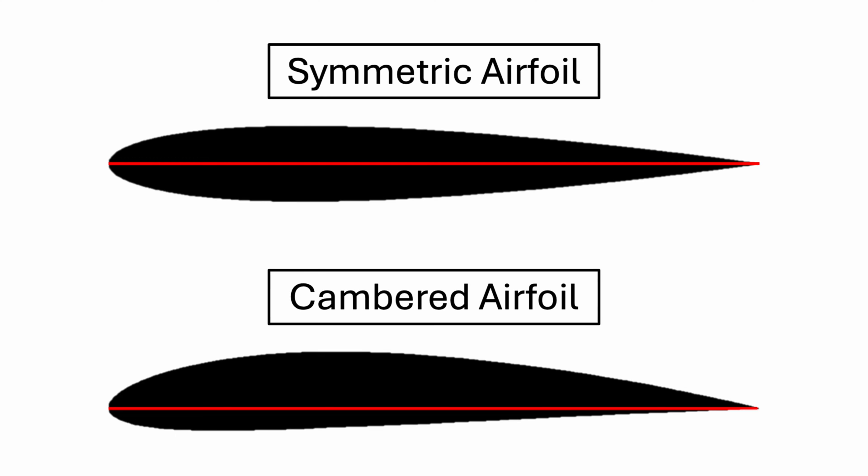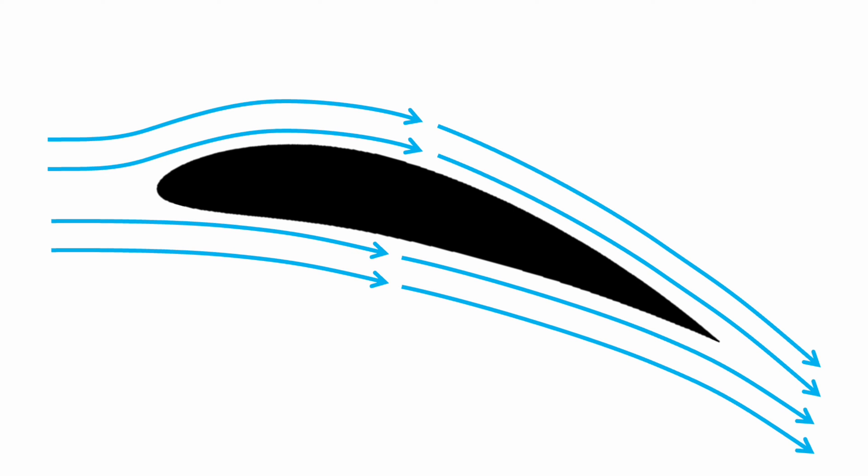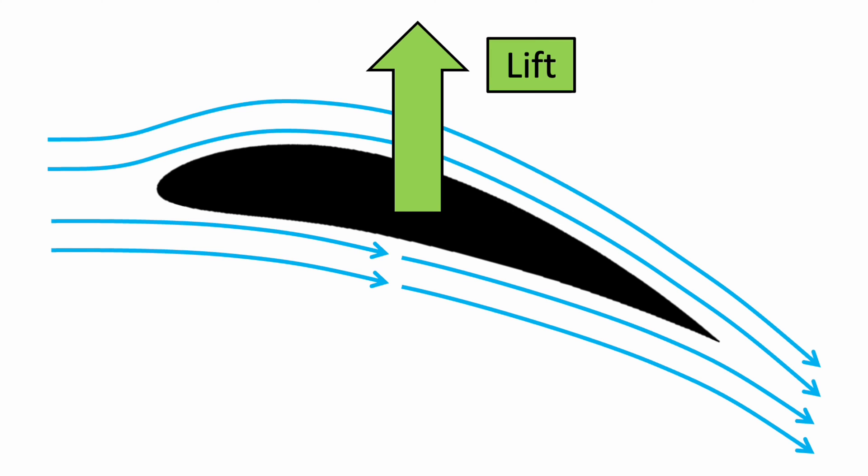This curve is called camber. A cambered airfoil works by directing the airflow downwards more effectively than a symmetric one. Because the airflow is being forced downwards more, then by Newton's third law, the equal and opposite upwards force is greater as well.